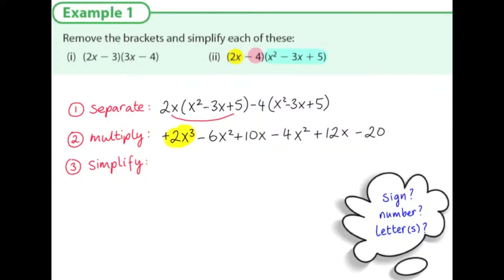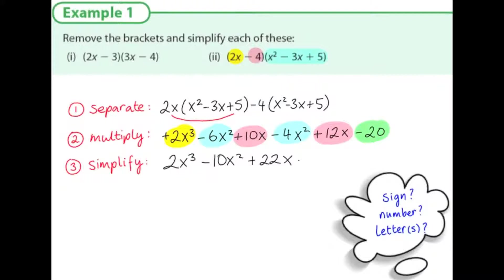We want to simplify these terms. We have an x cubed term: 2x cubed. We have two x squared terms. We have two terms with x. And lastly, we have a constant minus 20 at the end. Simplifying: 2x cubed; minus 6x squared minus 4x squared is minus 10x squared; plus 10x plus 12x is plus 22x; and our constant term minus 20.